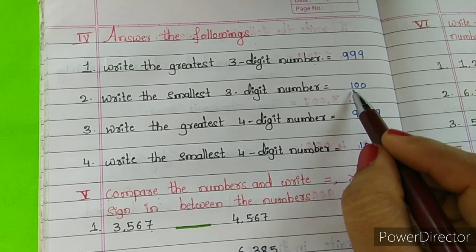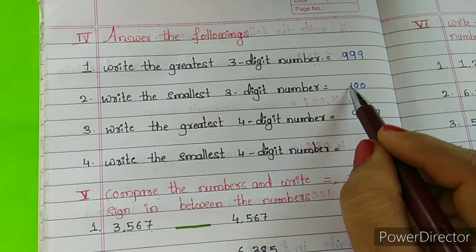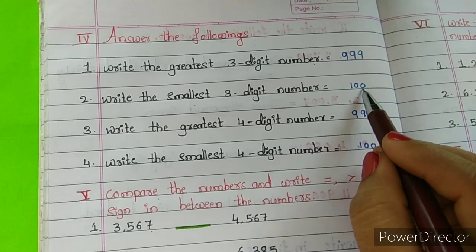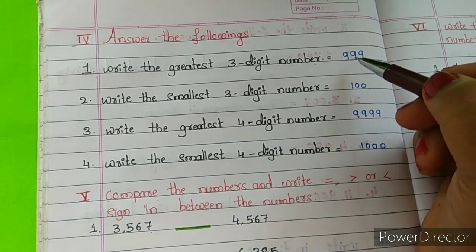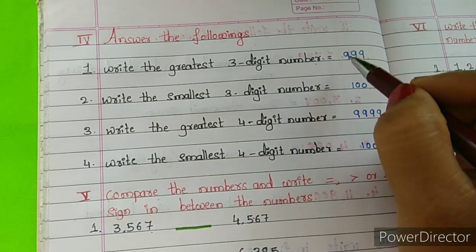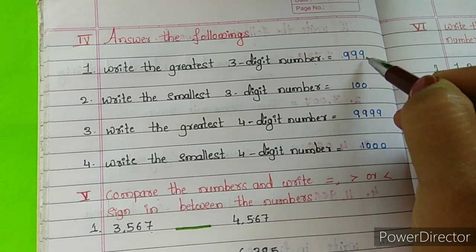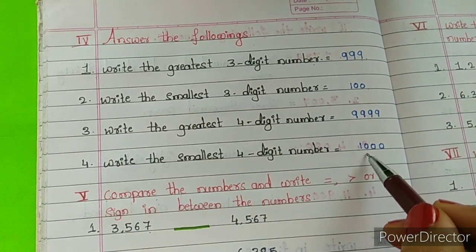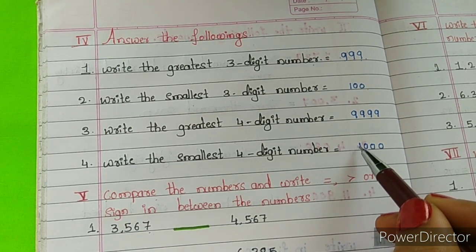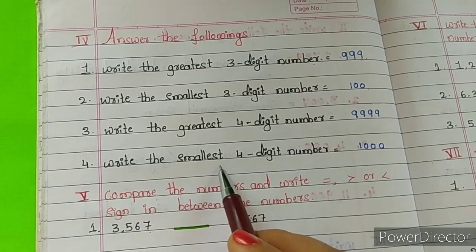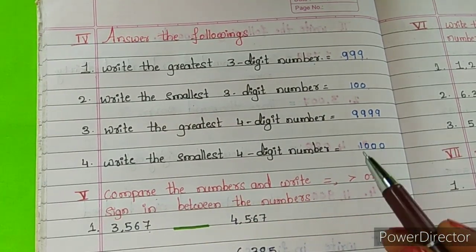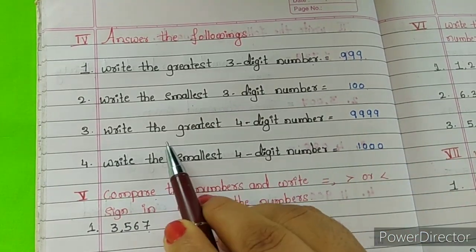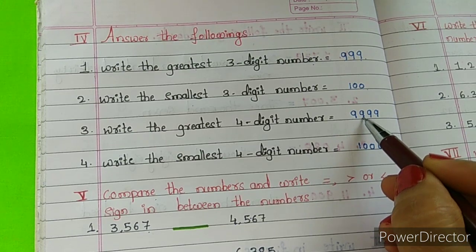After 99, the next number is 100. How many digits are there in 100? Three digits — so 100 is the smallest 3-digit number, and 999 is the greatest 3-digit number. After 999, which number comes? 1000. How many digits are in 1000? Four digits — so 1000 is the smallest 4-digit number, and the greatest 4-digit number is 9999.